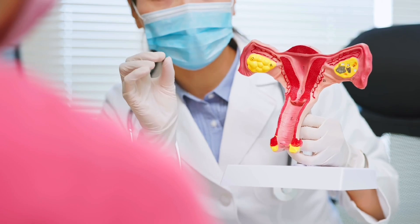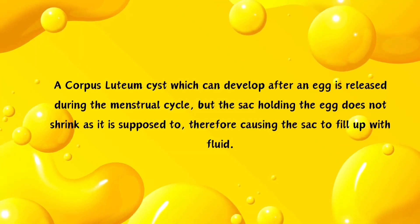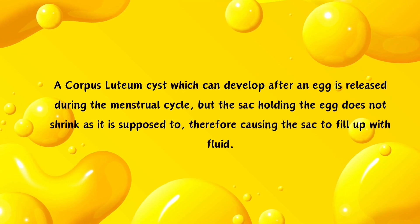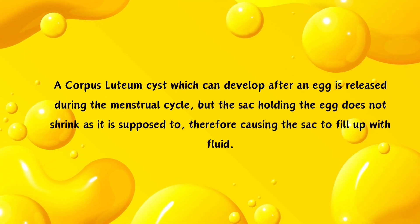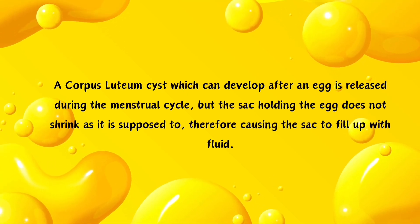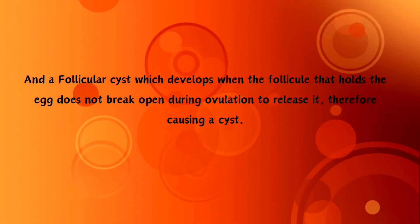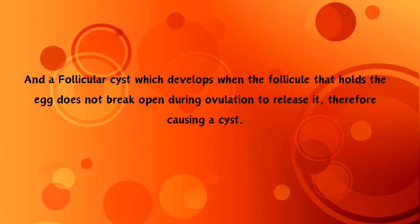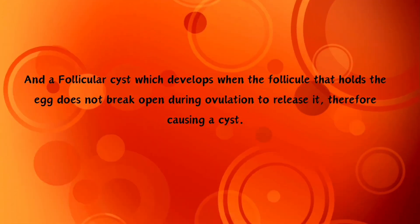There are two types of functional cysts. A corpus luteum cyst can develop after an egg is released during the menstrual cycle but the sac holding the egg does not shrink as it should, causing the sac to fill up with fluid. A follicular cyst can develop when the follicle holding the egg does not break open during ovulation to release it, therefore causing a cyst.